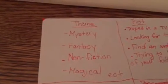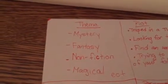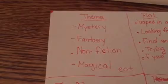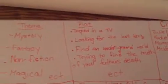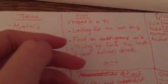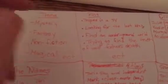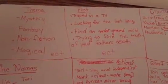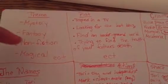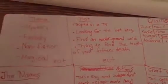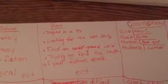The first thing you need is a theme — it could be mystery, fantasy, non-fiction, magical, etc. Then you need a plot. For example, if you choose mystery, you could do 'trying to find the truth of your father's death' or 'looking for the lost key.' Or if you choose fantasy, something like 'trapped in the TV.'